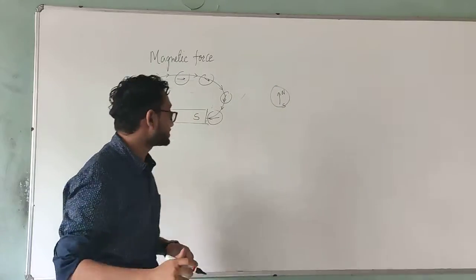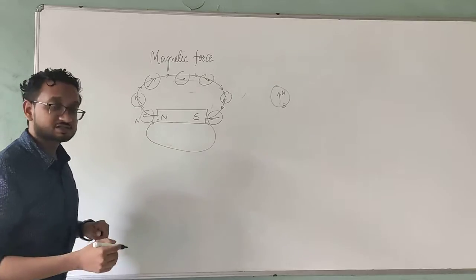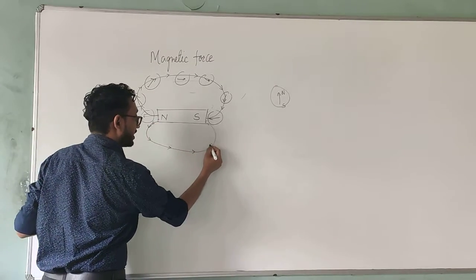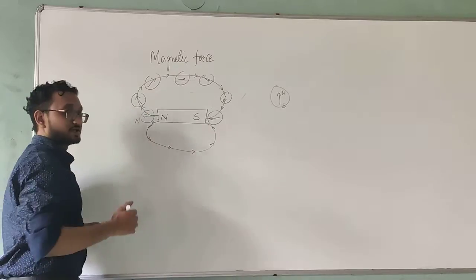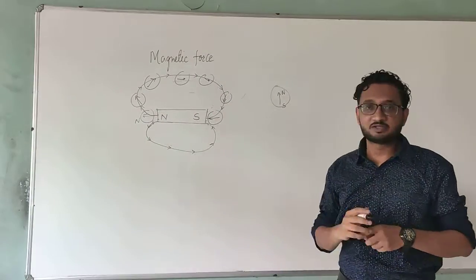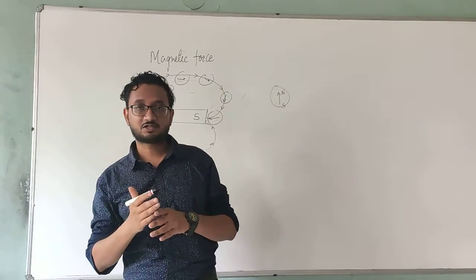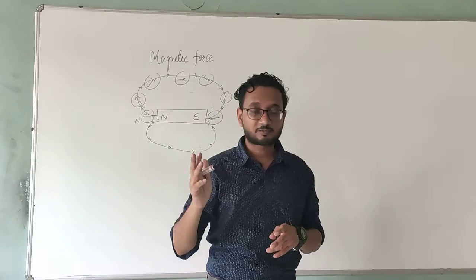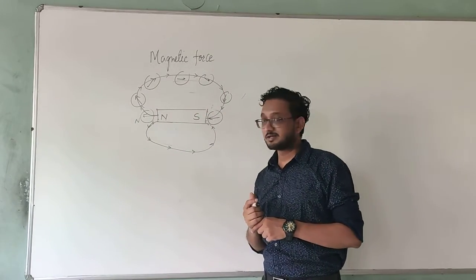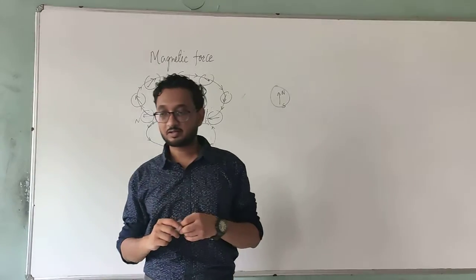If we place the compass in the downward direction as well, we can confirm that the magnetic field lines are coming from the north pole direction and entering the south pole. So every single time, the field lines emerge from the north pole and enter the south pole. I hope this is clear to you students — very simple magnetic field lines.